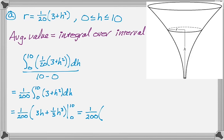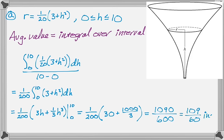Plugging in 10, I get 30 plus 1000 over 3, which you could actually just stop there and put inches, but most people probably don't. So I'm going to add that up, get 1090 over 600, which simplifies to 109 over 60, and that's in inches.